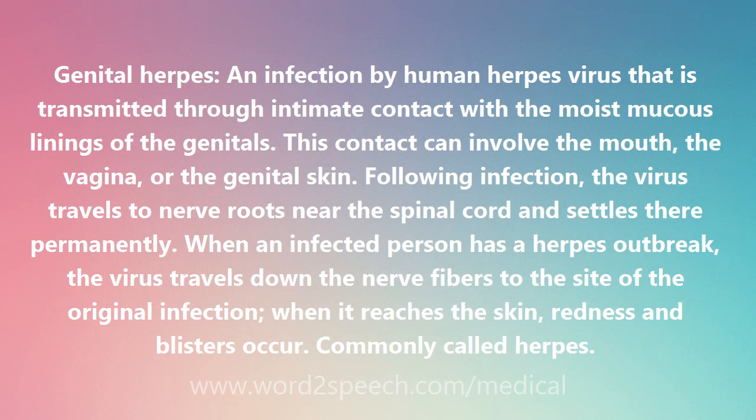Following infection, the virus travels to nerve roots near the spinal cord and settles there permanently. When an infected person has a herpes outbreak, the virus travels down the nerve fibers to the site of the original infection. When it reaches the skin, redness and blisters occur, commonly called herpes.